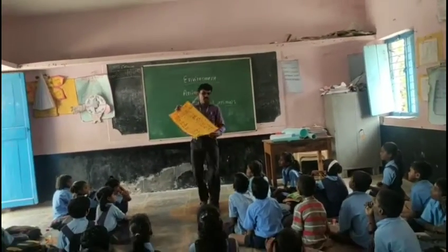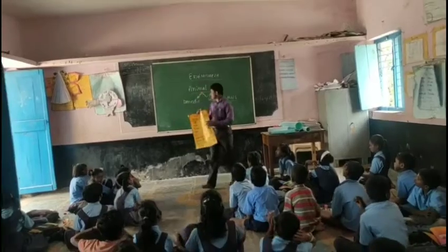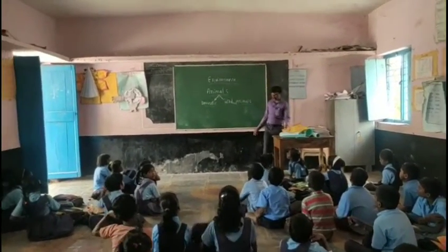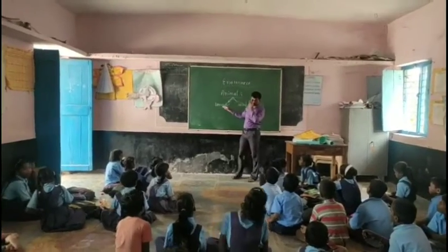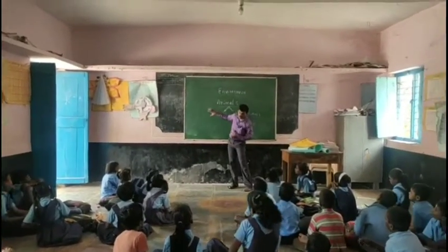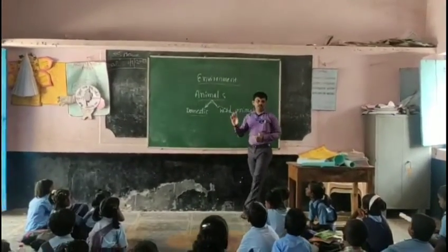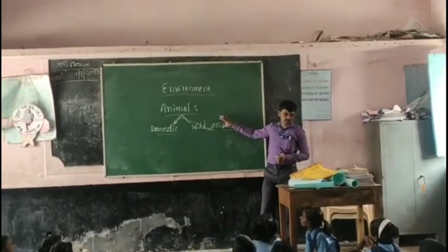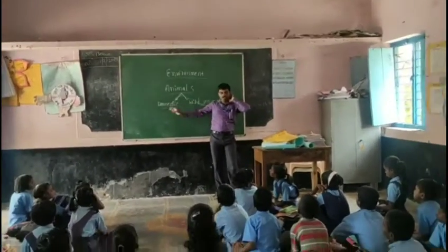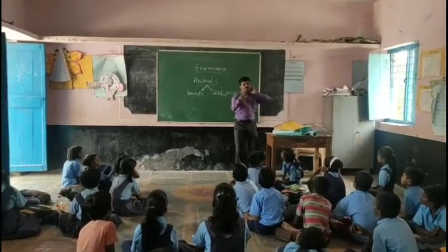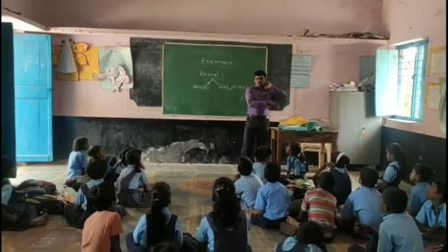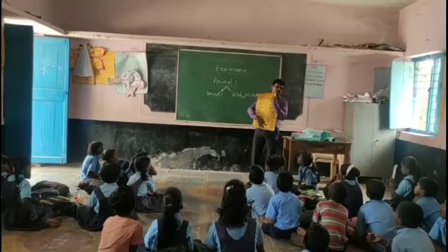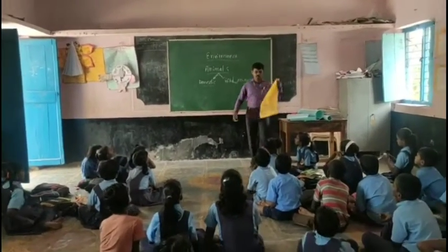All these types of animals are domestic animals. Animals living with us, those are called domestic animals. Now we are discussing about the wild animals. These are the animals called domestic animals.